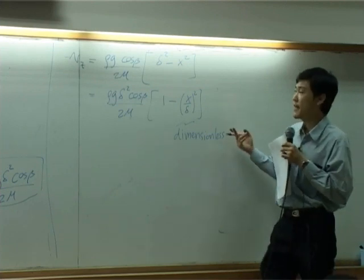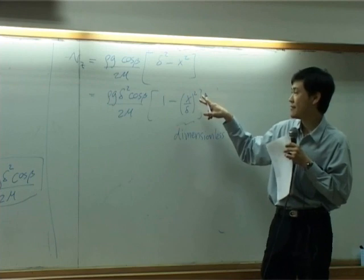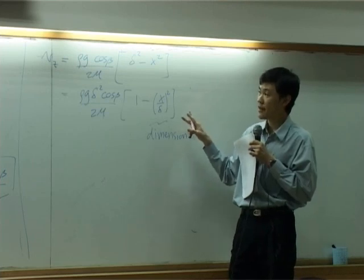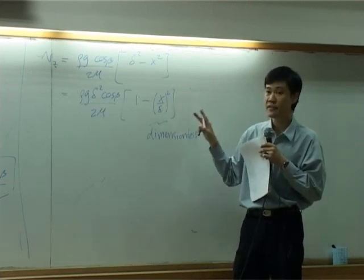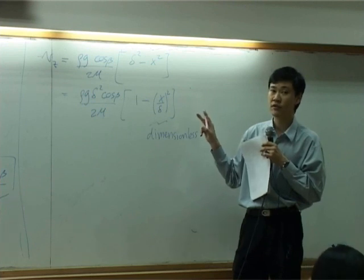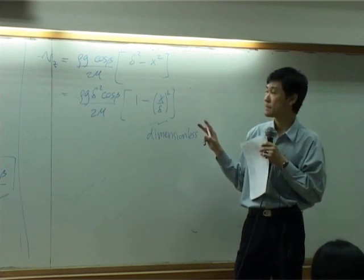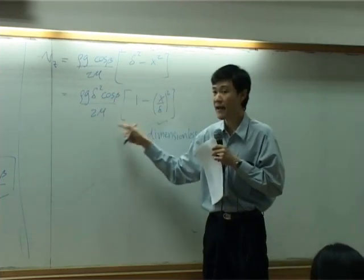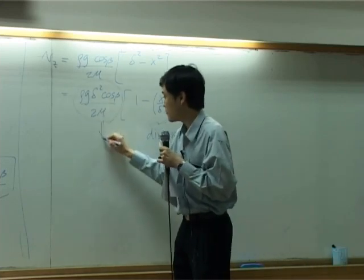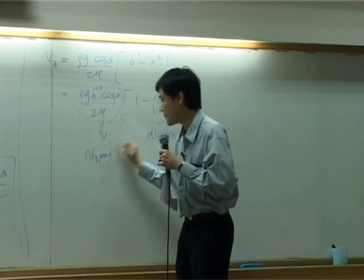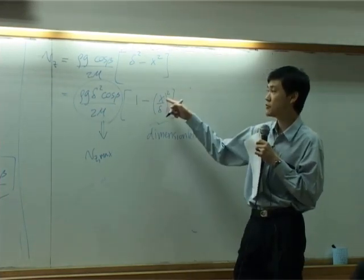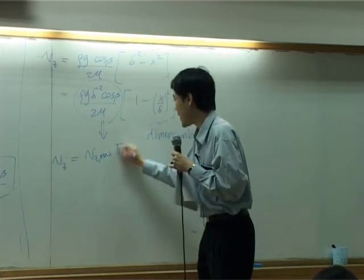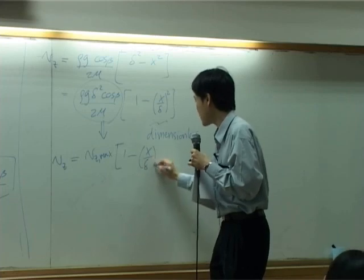Now you can calculate velocity at any point in our system. And you will see that velocity would be maximum at which position? If x is 0, then velocity is maximum. This term would transfer into velocity maximum. Because at x equal to 0 is maximum here. So you can write down vz equal to vmax, 1 minus x over delta squared.